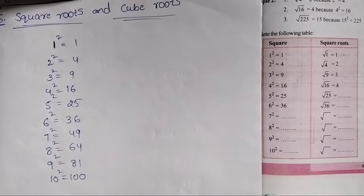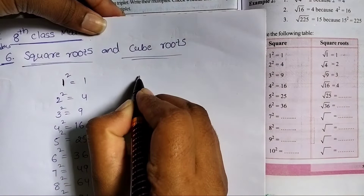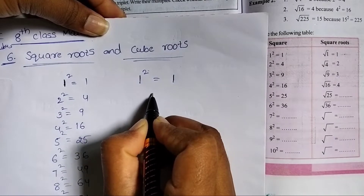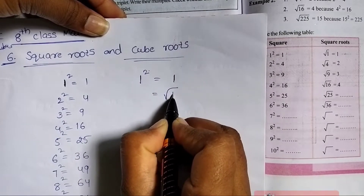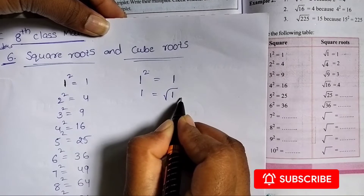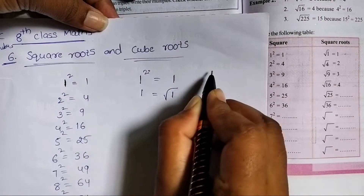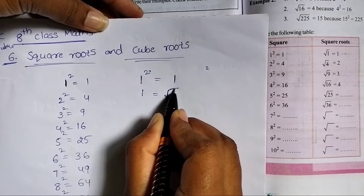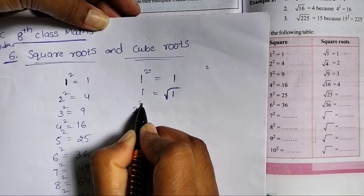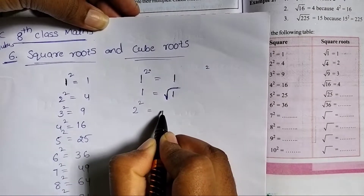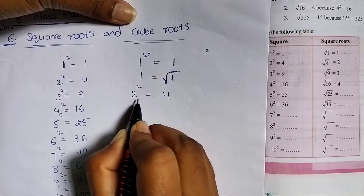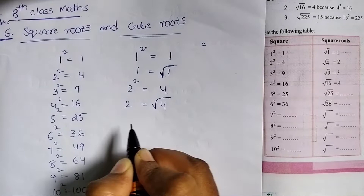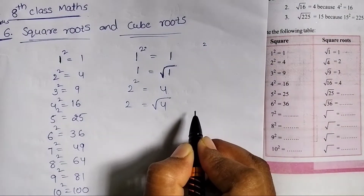Now I am going to explain the square root. 8 squared is equal to 64. The square root of 4 is equal to 2, because 2 is equal to root 4.